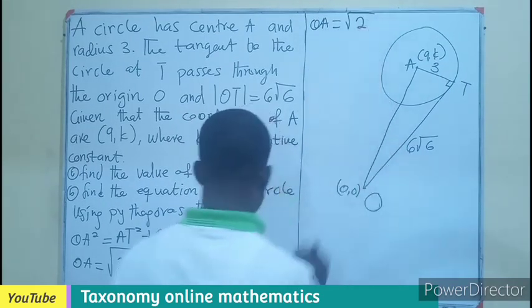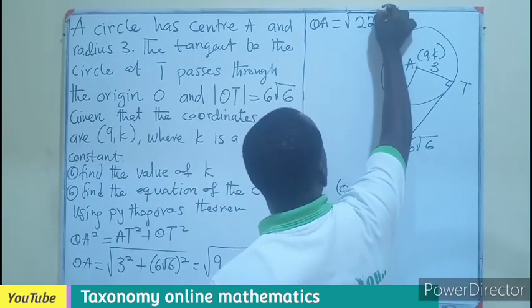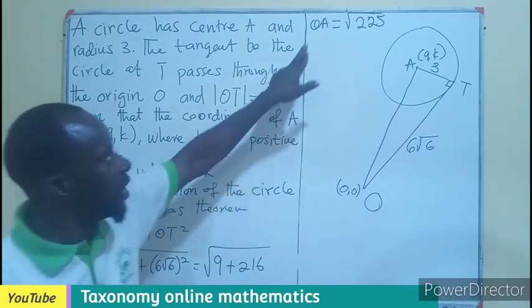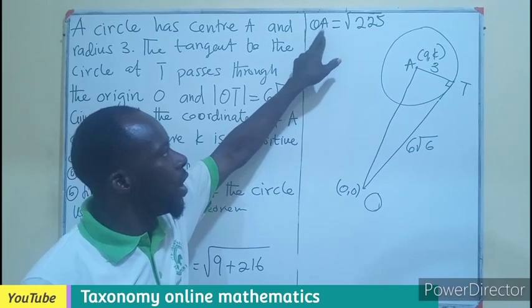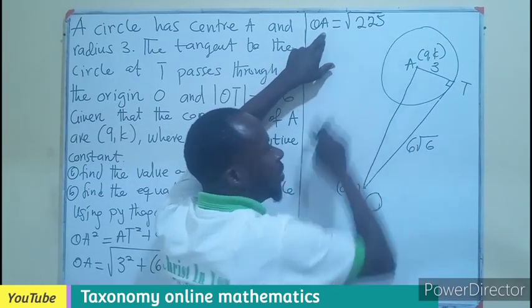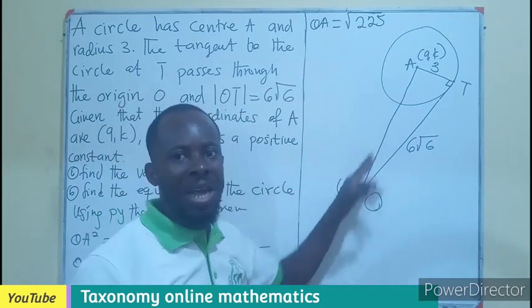So we can compute this together to have our OA equals to the root of 225. In this case, 225 could be the value of OA. And OA is here. If you find the square root of this, you will be having 15. That is using the Pythagorean theorem.